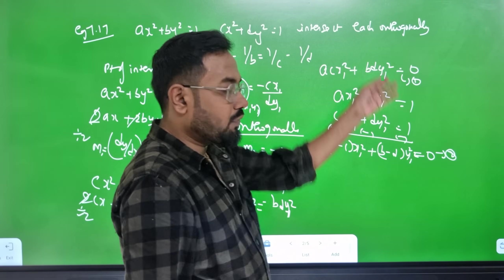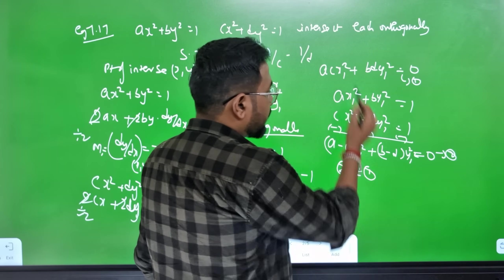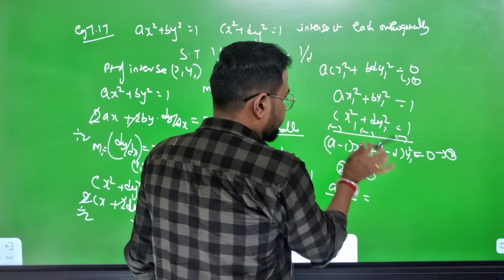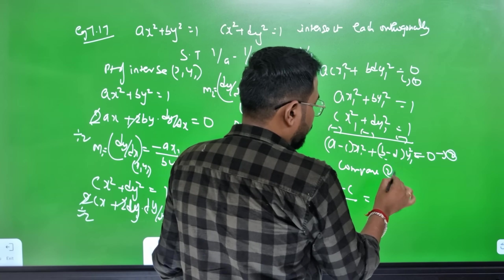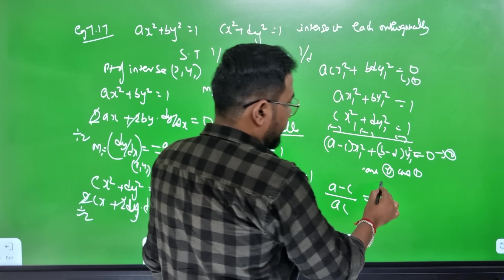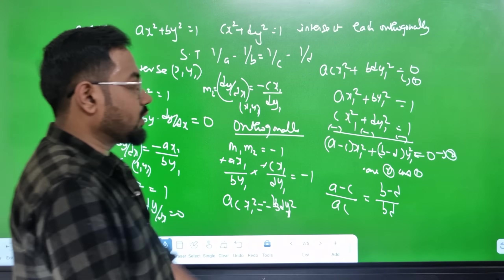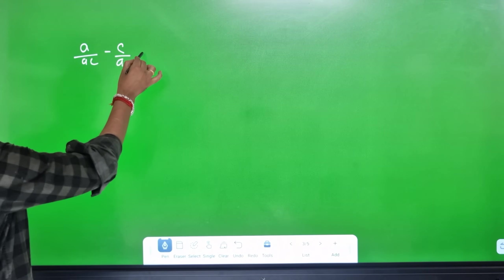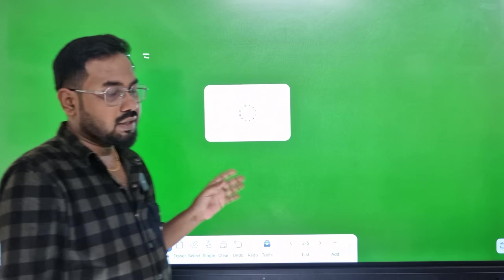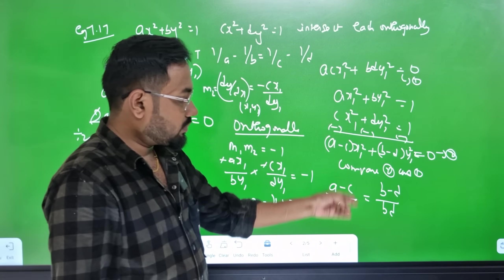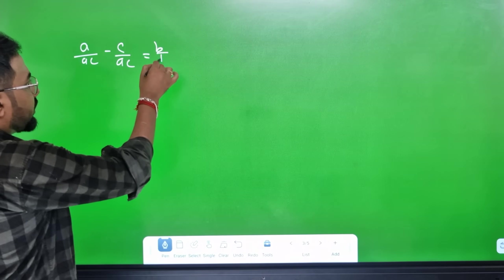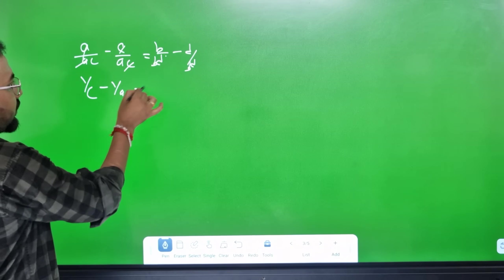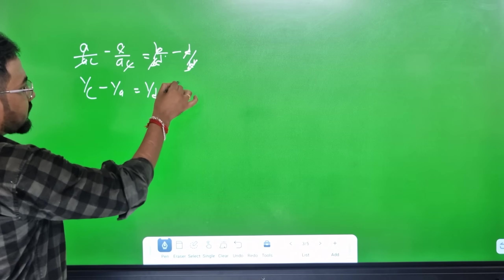Comparing x1² and y1²: x1² = (1/a − 1/c)/(ac) and y1² = (1/b − 1/d)/(bd). Cancelling a and c, then b and d, we get 1/c − 1/a and 1/d − 1/b.